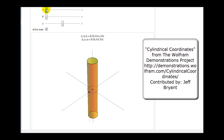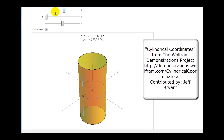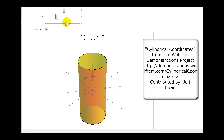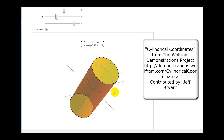As we increase R we're moving along the positive x-axis or polar axis. As we increase theta we rotate counterclockwise from the polar axis or positive x-axis, and as we increase or decrease Z we will either move up or down. Here you can see why it's called the cylindrical coordinate system — any point could be viewed as on a cylinder, and here's the location of that point in space.